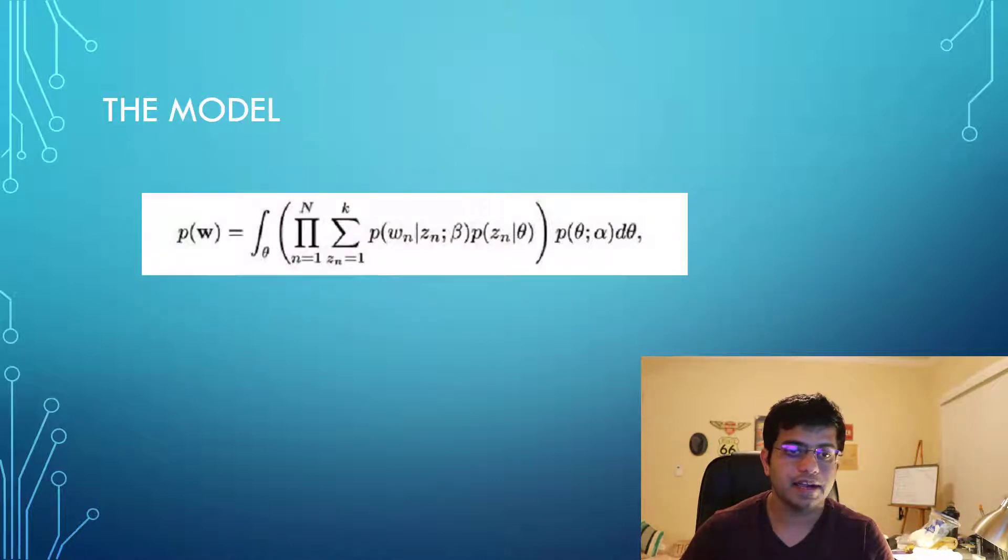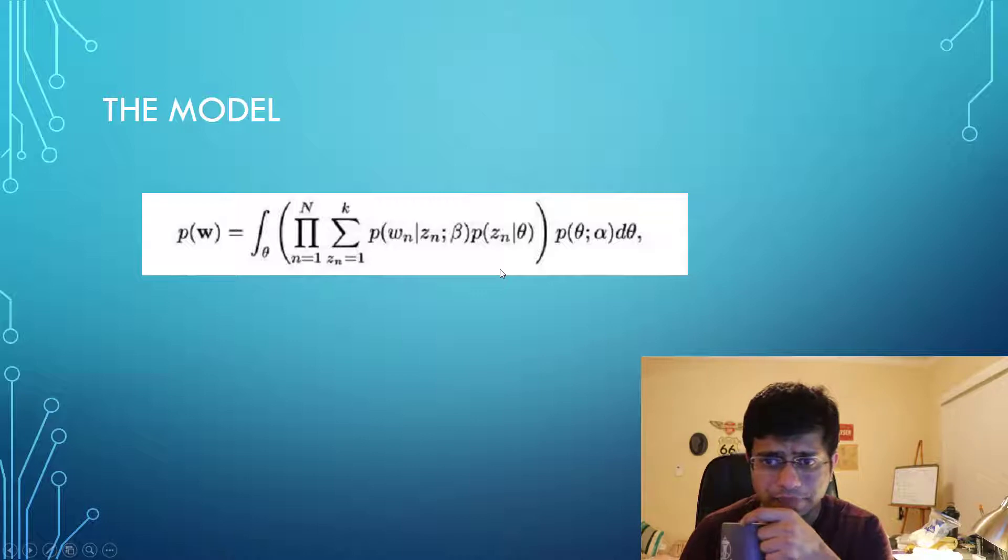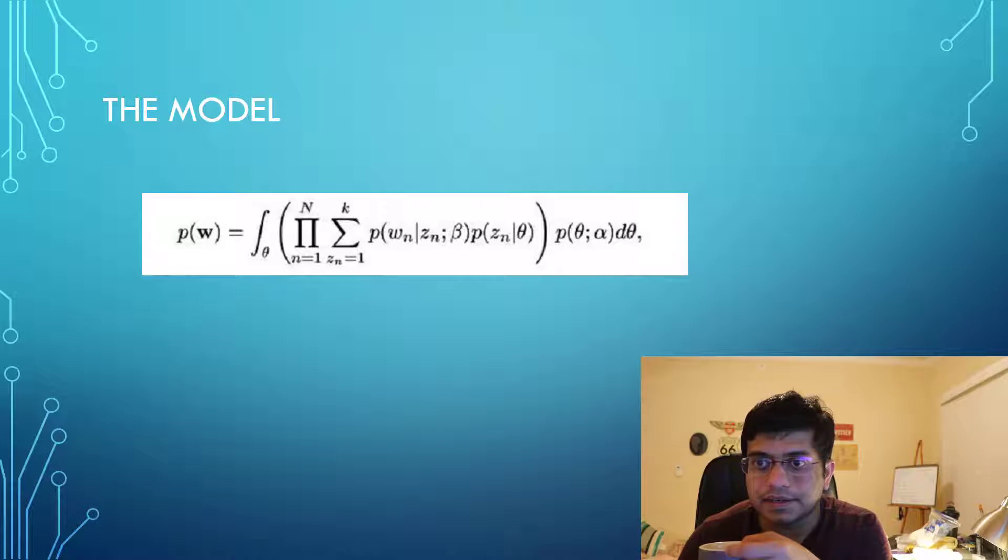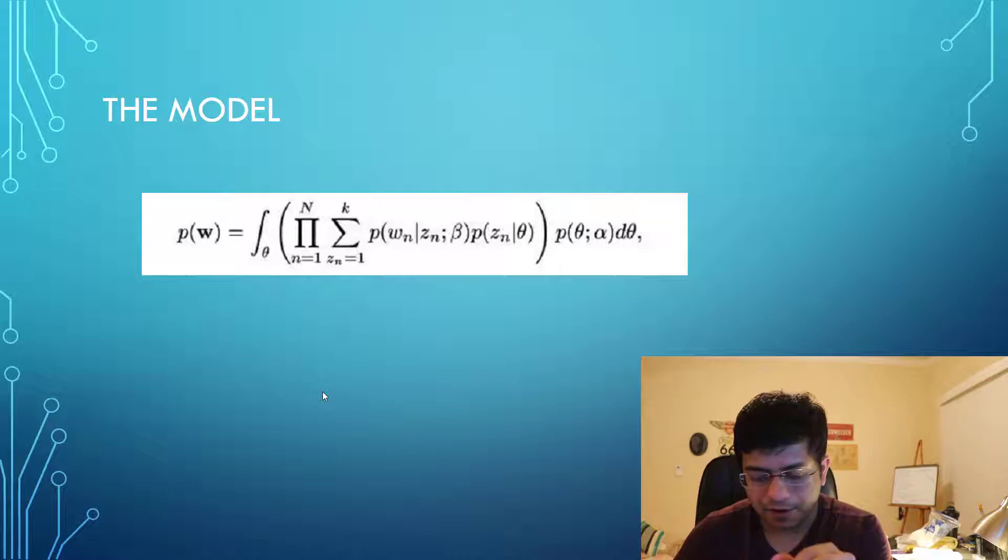The model says that probability of the word looks something like this equation. Theta is a sample from a distribution and theta lies in k-1 dimensional space. Summation of all those theta is equal to 1. If you compare it with other models which are used for topic modeling, those are based on frequency of occurring words but this model actually works on distribution of words over documents.